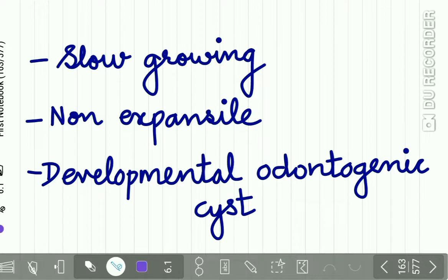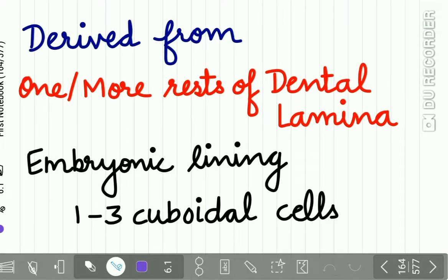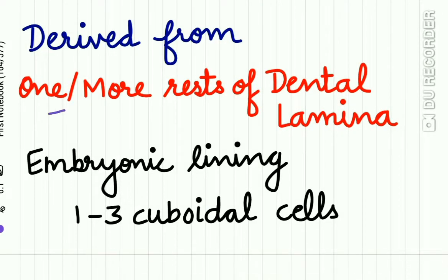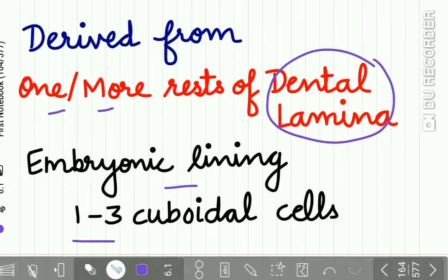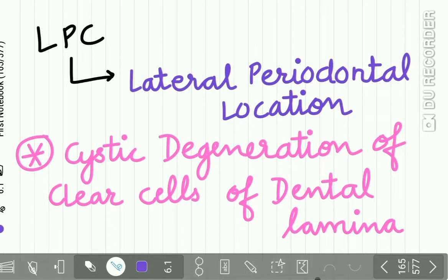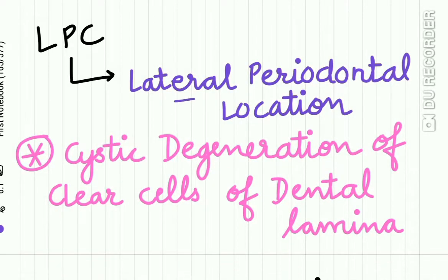Lateral periodontal cyst is a slowly growing non-expansile developmental odontogenic cyst. It is derived from one or more rests of the dental lamina. The cyst has an embryonic lining which is 1-3 cells thick and these cells are cuboidal in shape. It appears on the lateral periodontal location of the tooth, as the name implies.